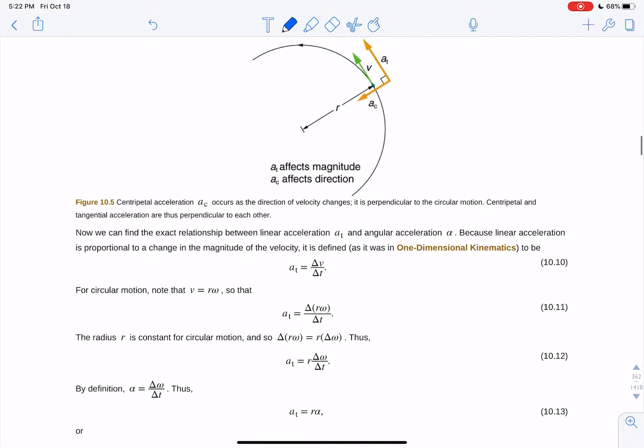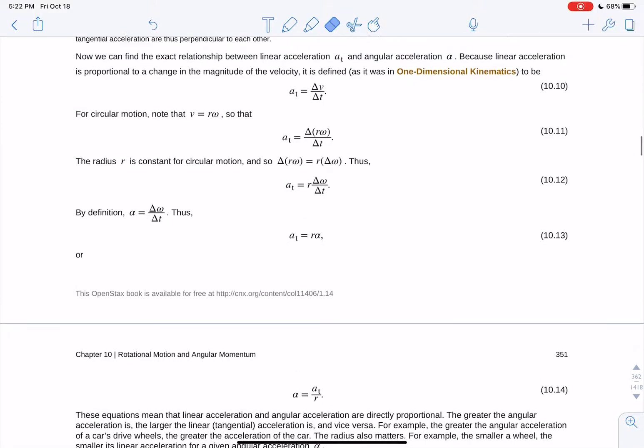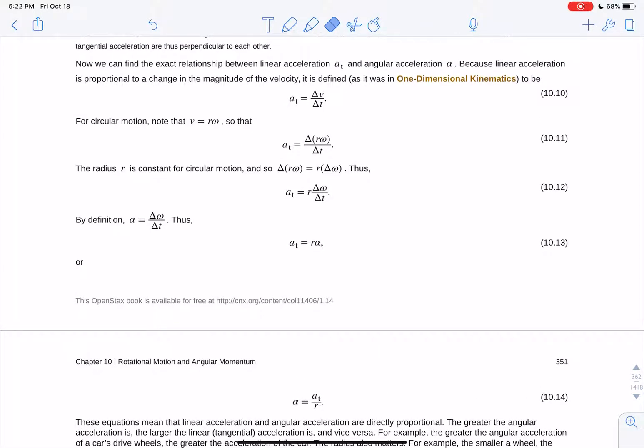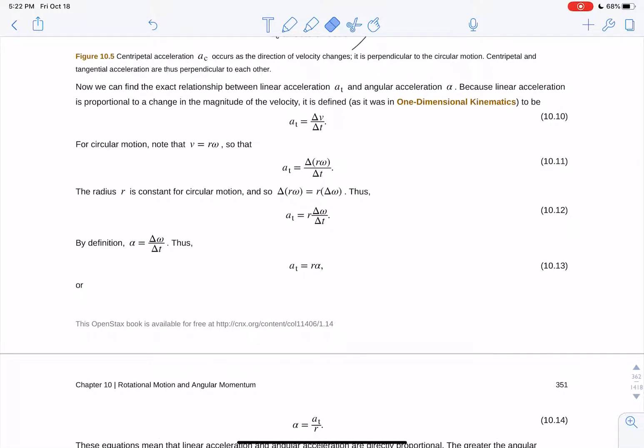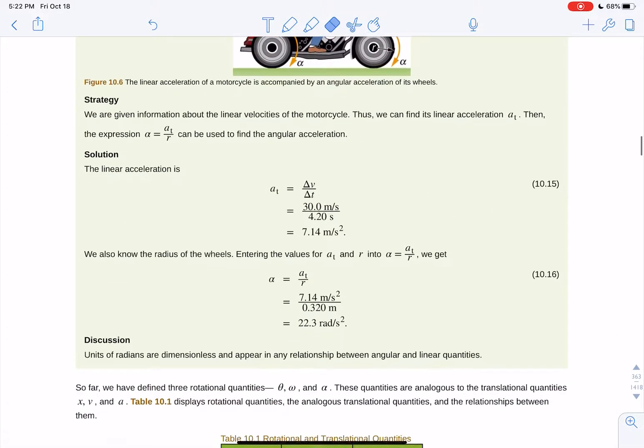Your centripetal acceleration is always directed towards the center. That's different from this tangential acceleration, which might cause something to actually accelerate. So your tangential acceleration is your regular velocity over regular time, or translational velocity over time.